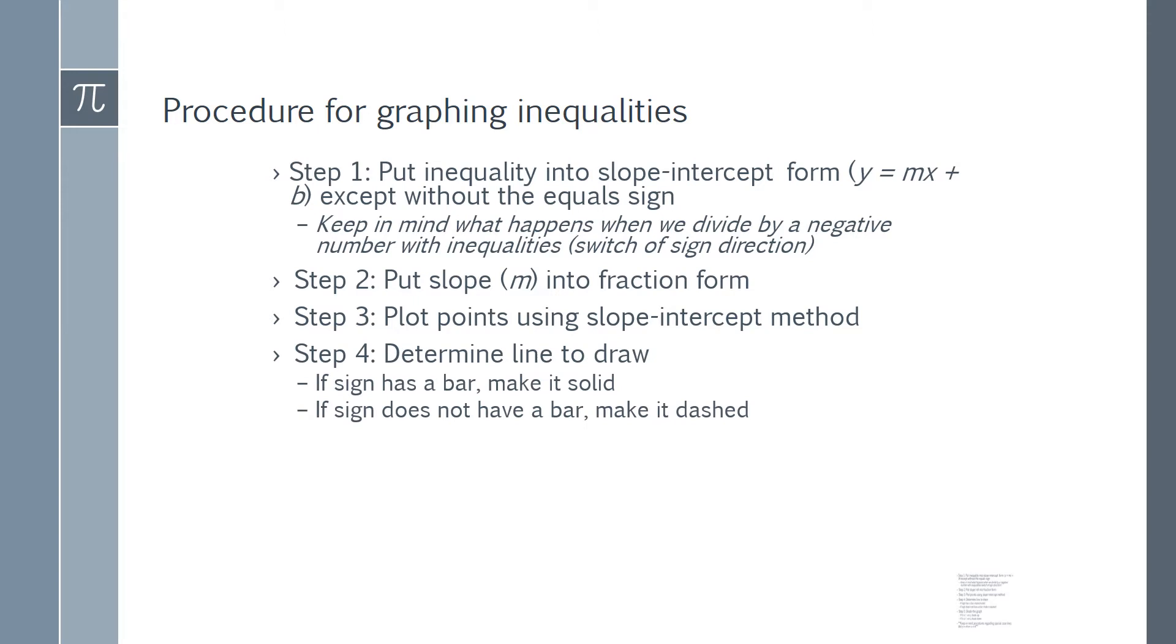Step 4 is to determine the line you want to draw. If your inequality sign has a bar, you want to make it a solid line. If your sign does not have a bar, you want to make it a dashed line, and you need to make your dashes very clear.